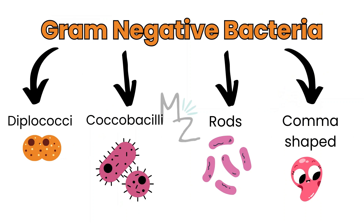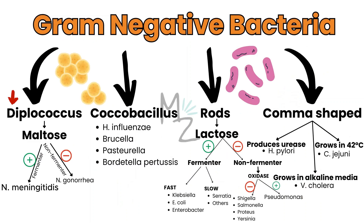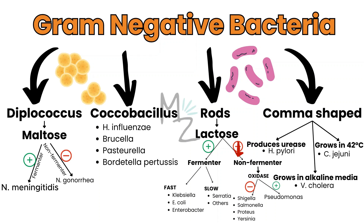Gram-negative bacteria are also classified based on their shapes: Diplococci, Coccobacilli, Rods and Comma-shaped. Diplococci are further subdivided based on maltose fermentation — if a bacterium ferments maltose, it's Neisseria meningitidis; if it doesn't, it's Neisseria gonorrhoeae. Coccobacilli include Haemophilus influenzae, Brucella, Pasteurella, Bordetella and Proteus. Rods are subdivided based on lactose fermentation — fast fermenters include Klebsiella, E. coli and Enterobacter; slow ones include Serratia. Non-lactose fermenters are subdivided by oxidase test: oxidase positive is Pseudomonas; oxidase negative includes Shigella, Salmonella, Proteus and Yersinia.